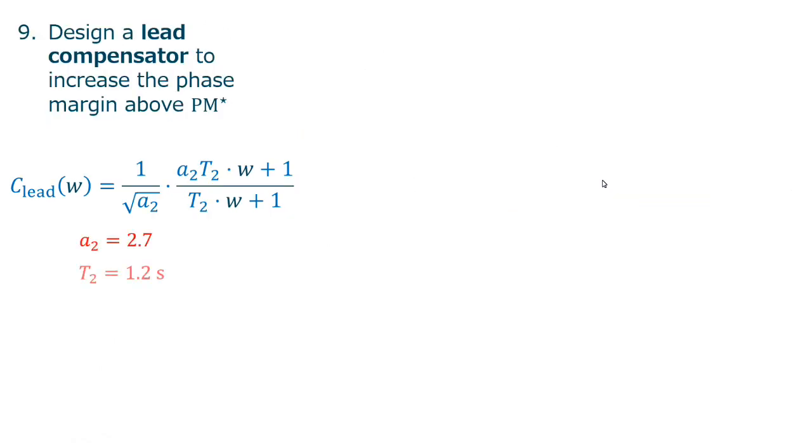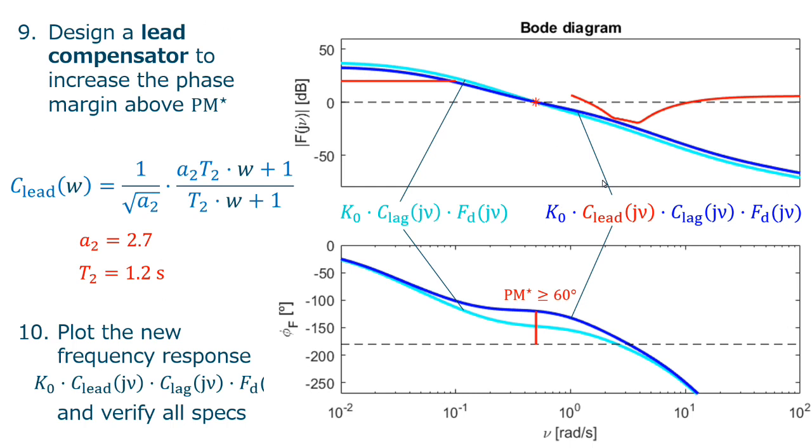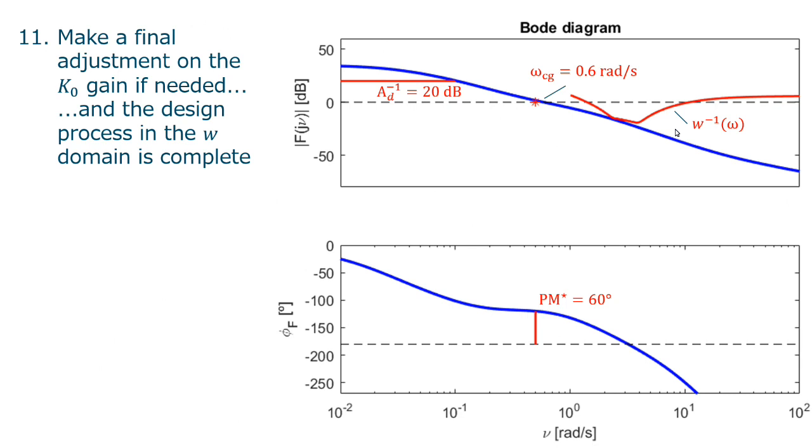So for this specific case, A2 and T2 goes like this. And as we plot the picture, we see that our phase margin is above the 60 degrees. It gets a little bit worse in this attenuation specification. And is being compliant with the inverse of W. We can make a final adjustment of the gain here again, if needed. And the design process in W domain is complete.